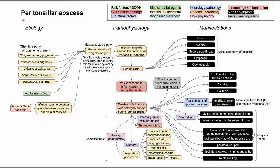This is a mechanism of disease map for peritonsillar abscess. I'll be talking about the etiology, the pathophysiology, and the manifestations of peritonsillar abscess. As in all of these flowcharts, each of the boxes is color-coded according to this legend in the top right, and I'll be clearing all of the boxes and talking through them one by one as we repopulate the flowchart.